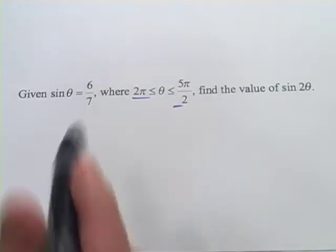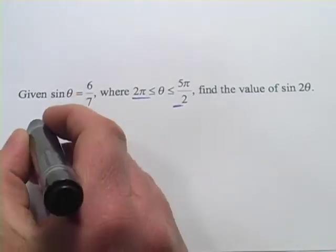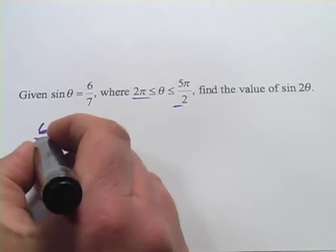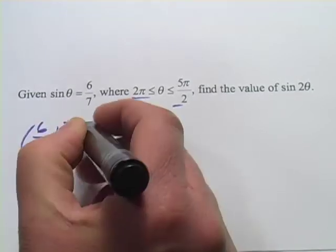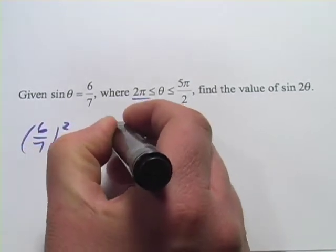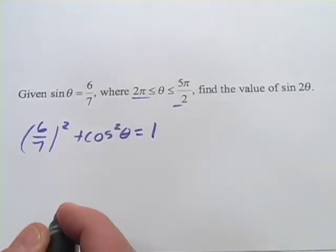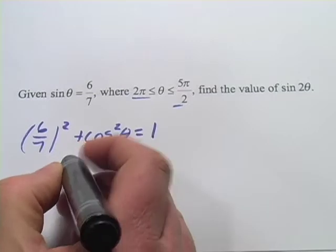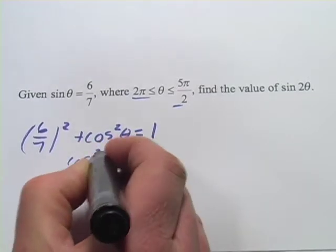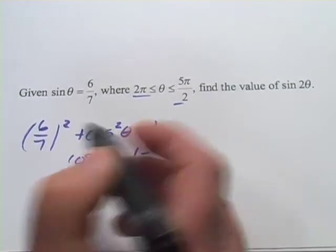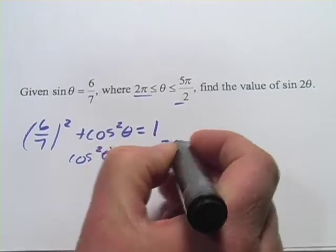If we've got the sine is 6/7 we know that the sine squared plus the cosine squared equals 1 and we can do our subtraction here. So that would be cosine squared of theta equals 1 minus that would be 36/49.